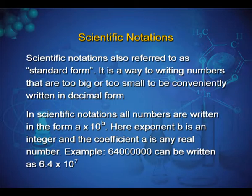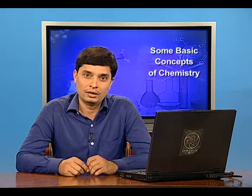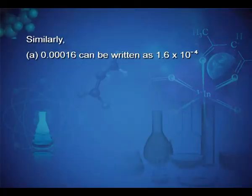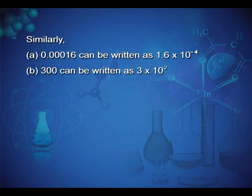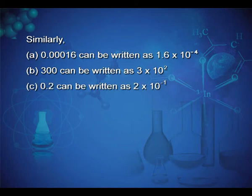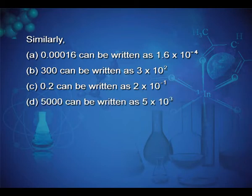Here, exponent b is an integer and the coefficient a is any real number. Example: 64000000 can be written as 6.4 × 10^7. Similarly, 0.00016 can be written as 1.6 × 10^-4, 300 as 3 × 10^2, 0.2 as 2 × 10^-1, and 5000 as 5 × 10^3.